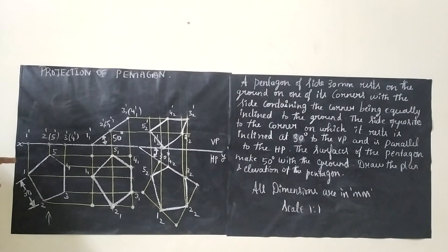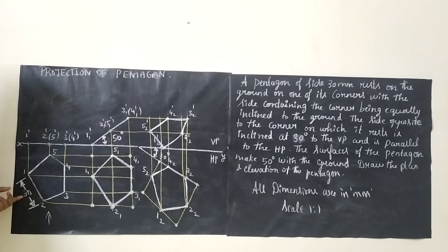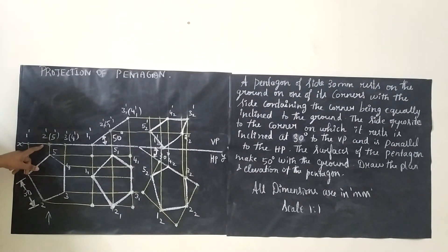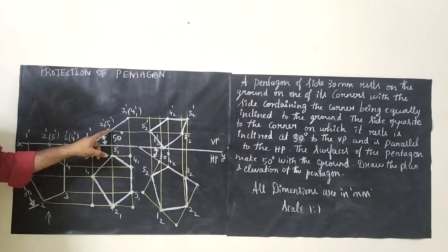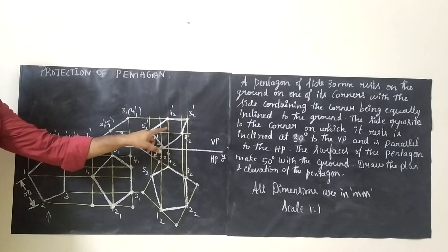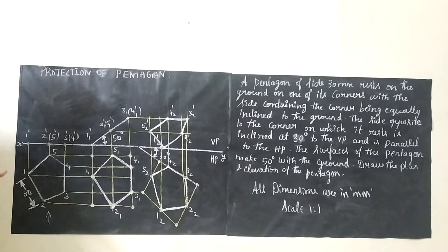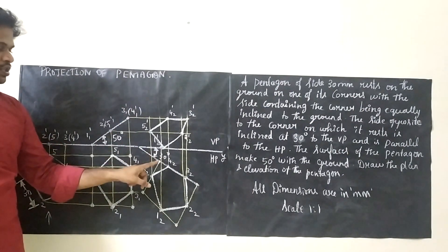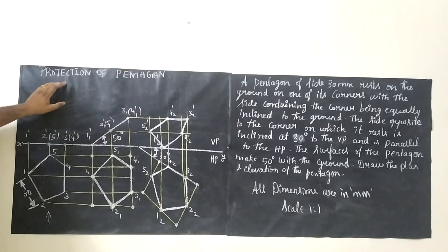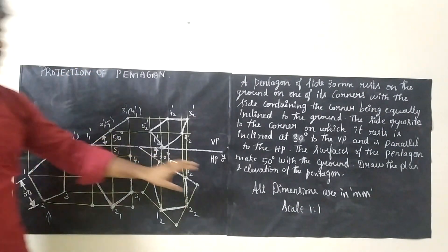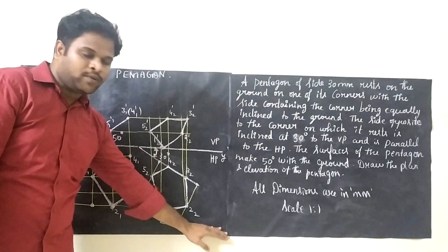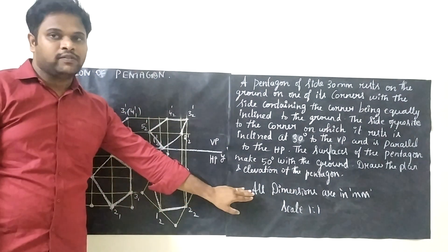Next, proceed with dimensioning. You can dimension any one side — draw the extension line and dimension line and write 30 mm. All things drawn on HP: front view HP, top view HP. Both front and top view should be labeled HP for surface inclination. The surface inclination angle is 50 degrees and edge inclination is 30 degrees. The height of the projection of the pentagon — height of the jet — should be 10 mm, and the title height should be 5 mm. Write all dimensions in mm and scale in the bottom right corner.